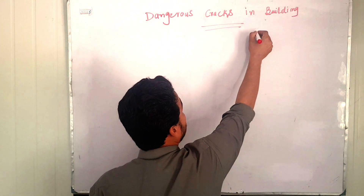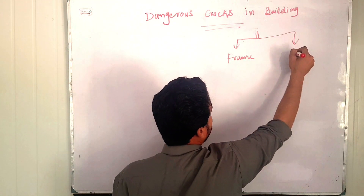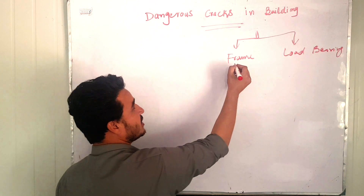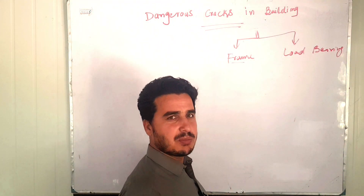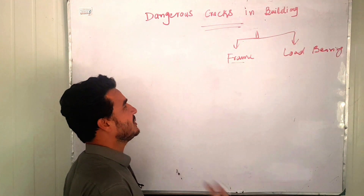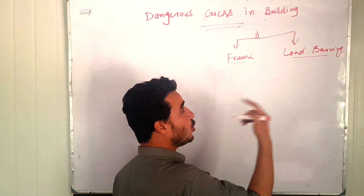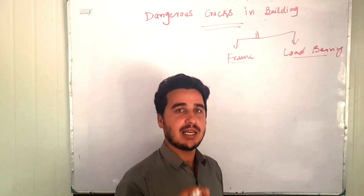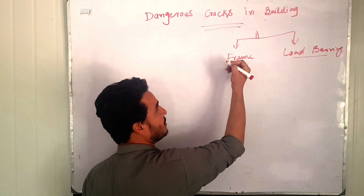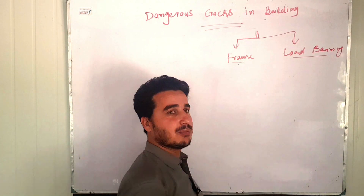Basically we have two types of buildings: the frame structure and the load bearing structure. In frame structures, cracks in partition walls are not of too much danger and can be treated later. In load bearing structures, cracks might be of greater importance because each and every member is under the main gravity and lateral load of the building.